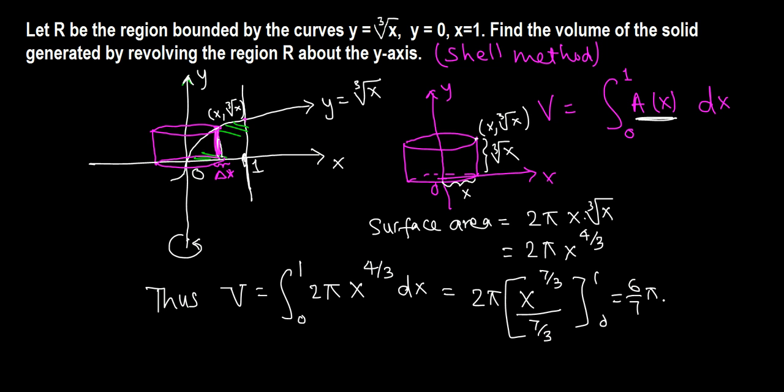1 raised to 7/3 is 1, so times 1 doesn't change anything. The final answer is 6π/7 cubic units.